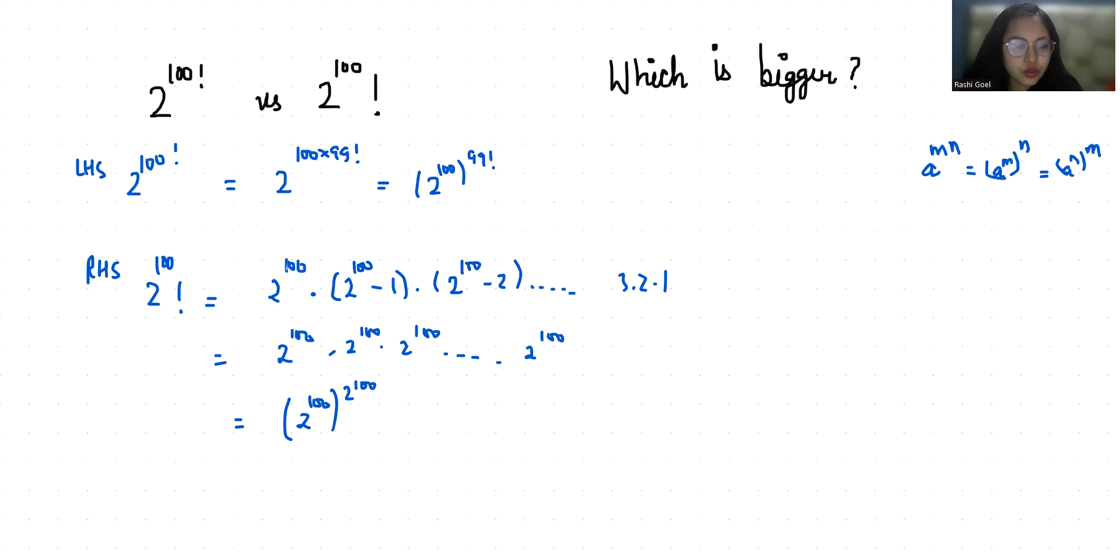Our LHS was (2^100)^(99!) equals (2^100)^(2^100). Now if I compare both sides, here is 99! and here is 2^100.